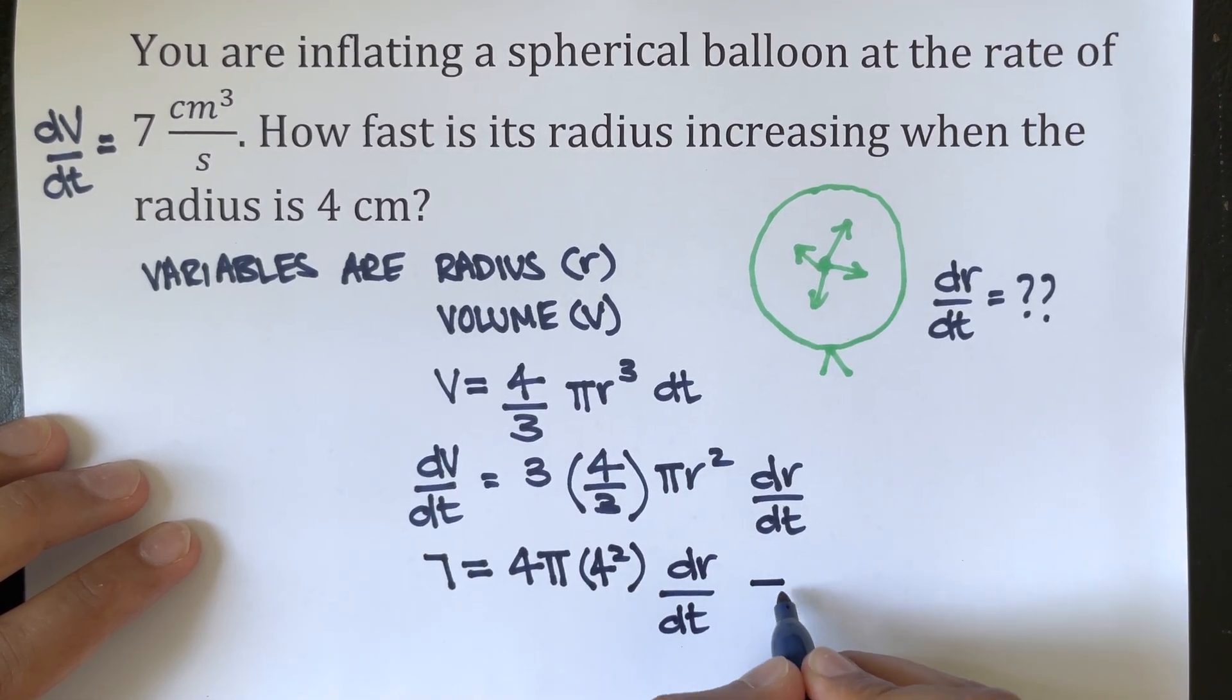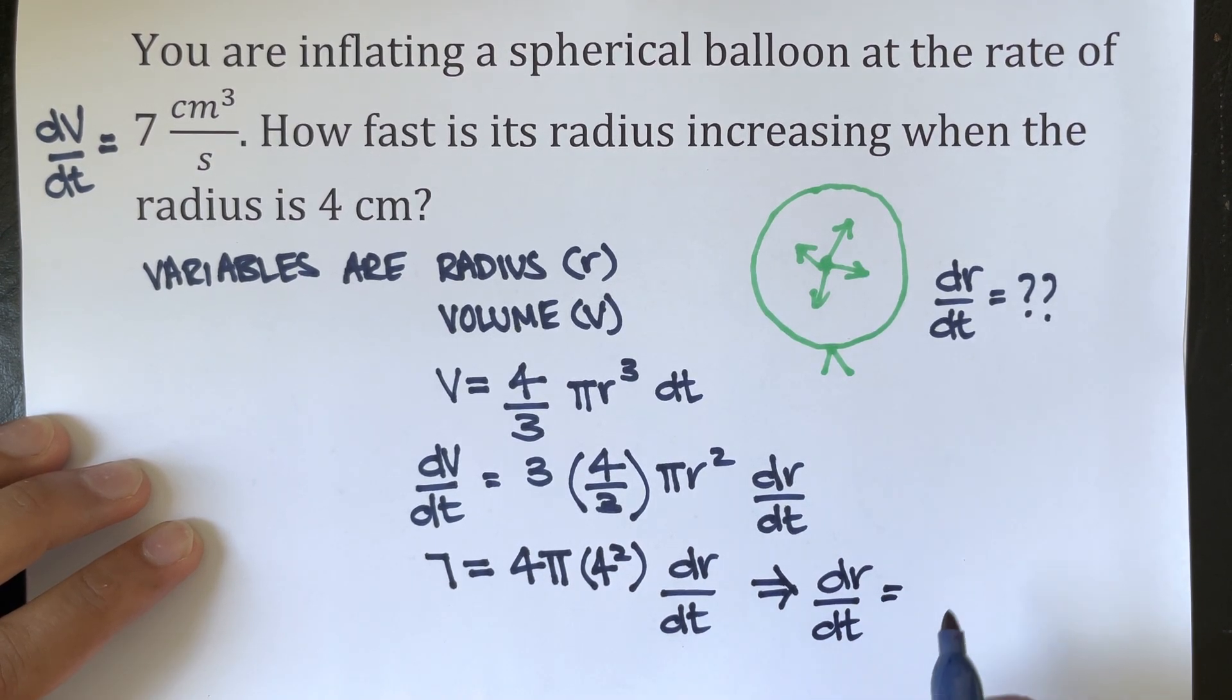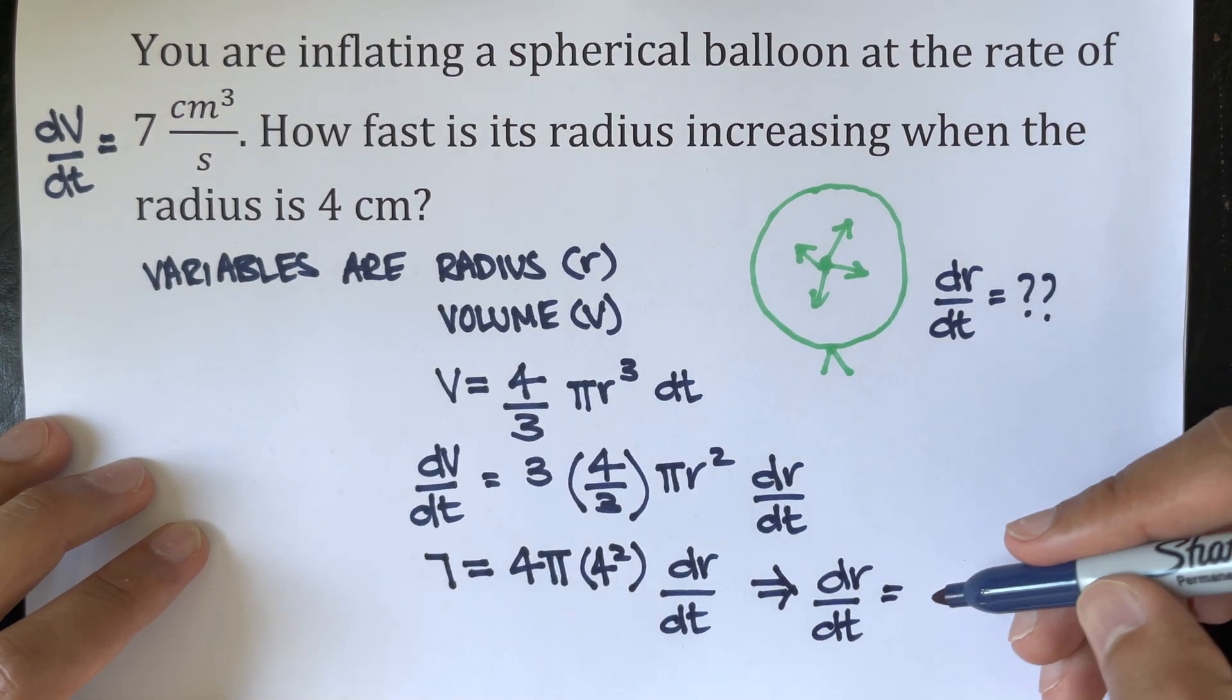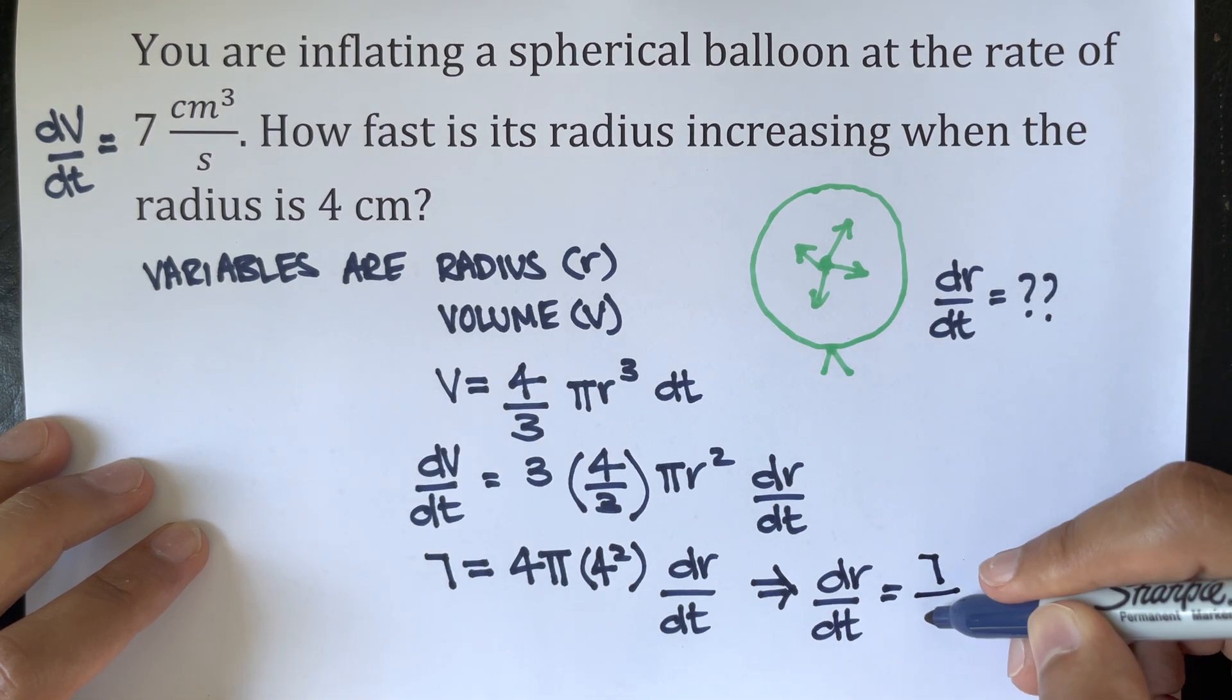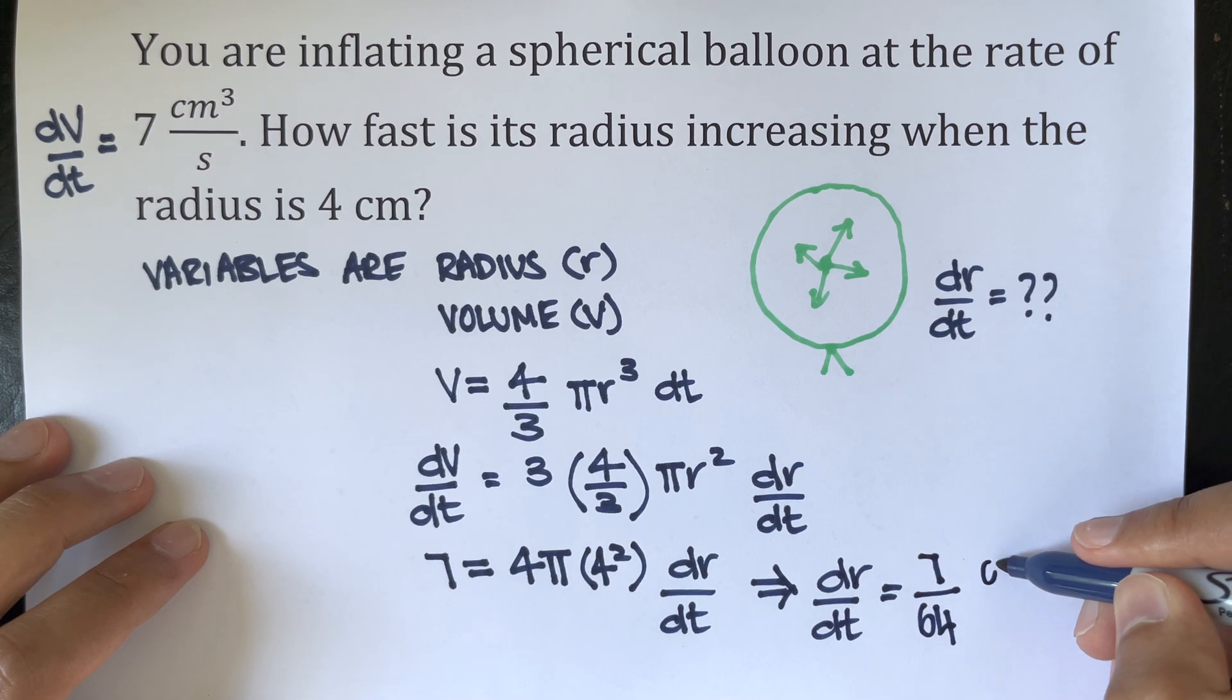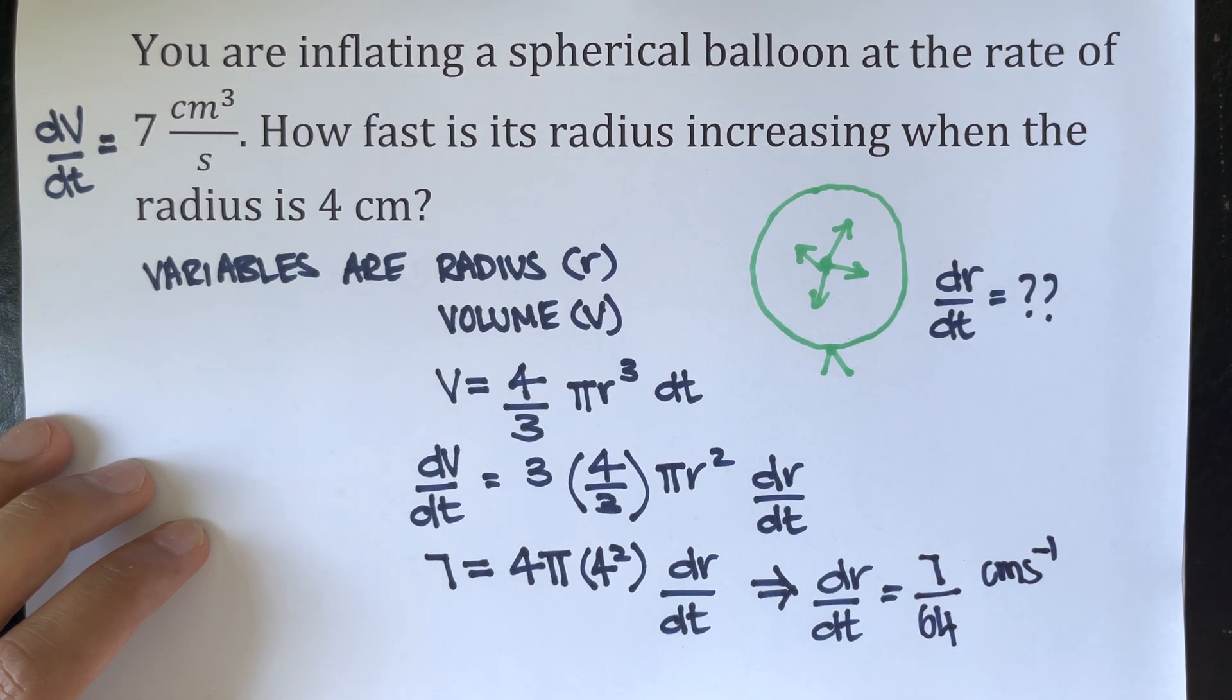Therefore, dr/dt equals 7 over 64π centimeters per second. And that is our answer.